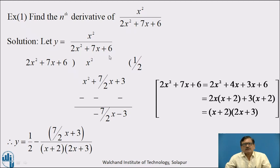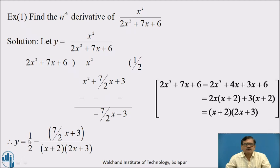Now we factorize 2x² plus 7x plus 6. We write 2x² plus 4x plus 3x plus 6, adjusting the middle term. In the first pair, we take 2x common to get 2x(x plus 2). In the second pair, we take 3 common to get 3(x plus 2). Taking (x plus 2) common, we get (x plus 2)(2x plus 3). So the factors of 2x² plus 7x plus 6 are (x plus 2)(2x plus 3). Using the quotient-remainder theorem, we write y equal to 1/2 minus (7/2 x plus 3) divided by (x plus 2)(2x plus 3).